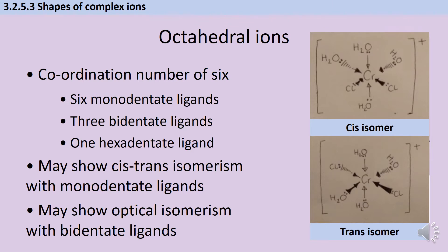So where you've got a complex ion that has an octahedral shape, the central transition metal ion is going to have a coordination number of six, in that it's going to make six dative covalent bonds. And that could be because it's bonded to six monodentate ligands like water or ammonia, it could be bonded to three bidentate ligands, or it could be bonded to one hexadentate ligand.